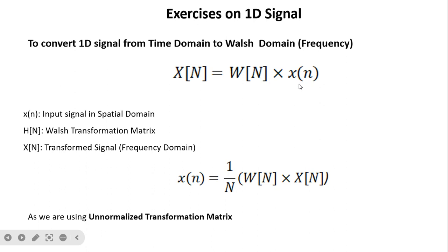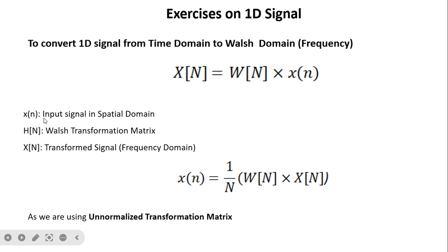Here x(n) is our signal in the time domain or spatial domain, and we are converting it into the Walsh domain. To convert back to the original domain we use (1/N) · W(n) · X(n). When our signal is one-dimensional we use 1/N, and when our signal is two-dimensional we use 1/N². Here x(n) is the input signal in the spatial domain, W(n) is the Walsh transformation matrix, and X(n) is the transform signal — the transformed signal is always represented in capitals.